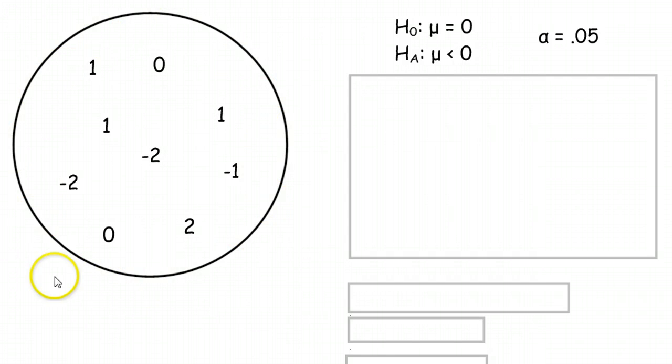Imagine this circle here is a population of a bunch of different numbers, and we are going to be going out and taking a sample of these to see if we can prove our null and alternative hypothesis. Now these symbols here, H0 and HA, is just shorthand for the null hypothesis and the alternative. And our alpha value, we decided, is going to be 0.05. That's how much evidence we need to be convinced that we can reject the null hypothesis.